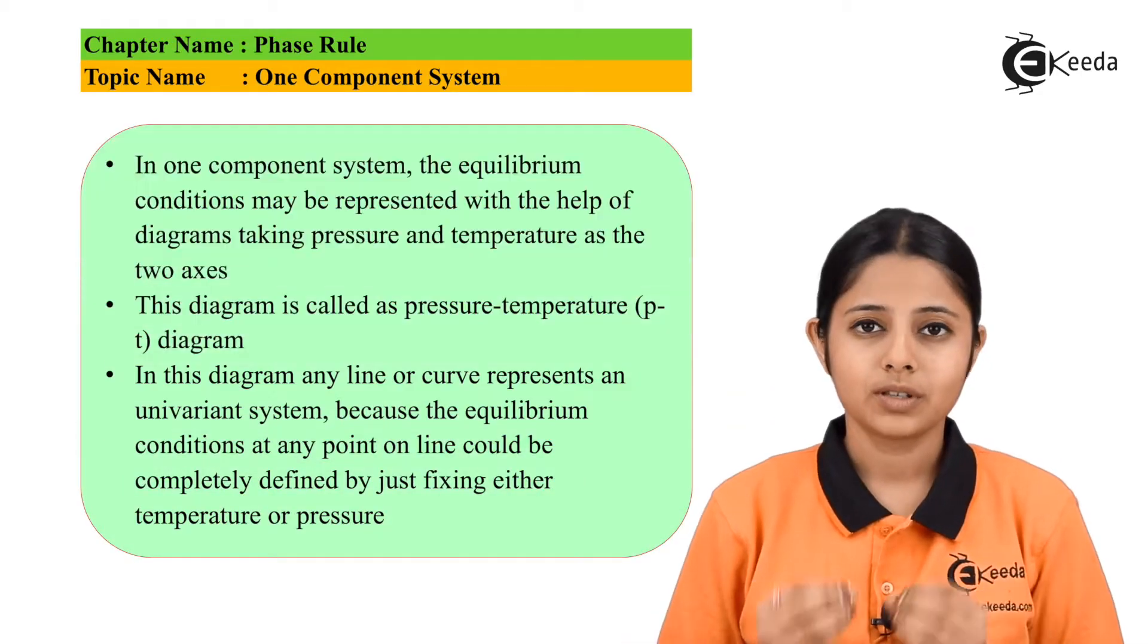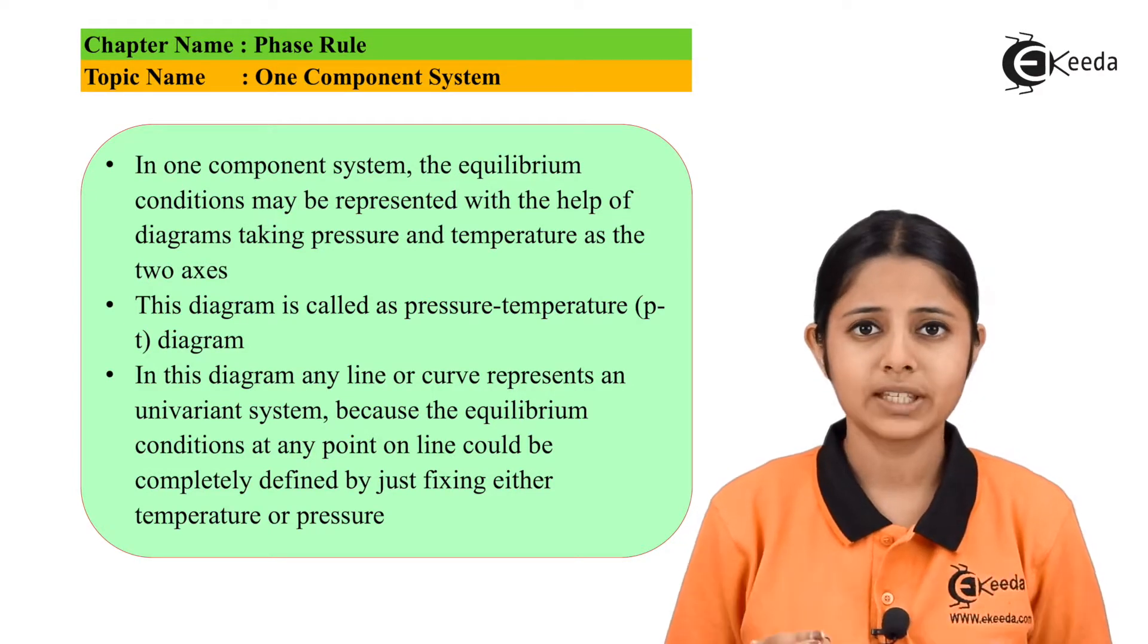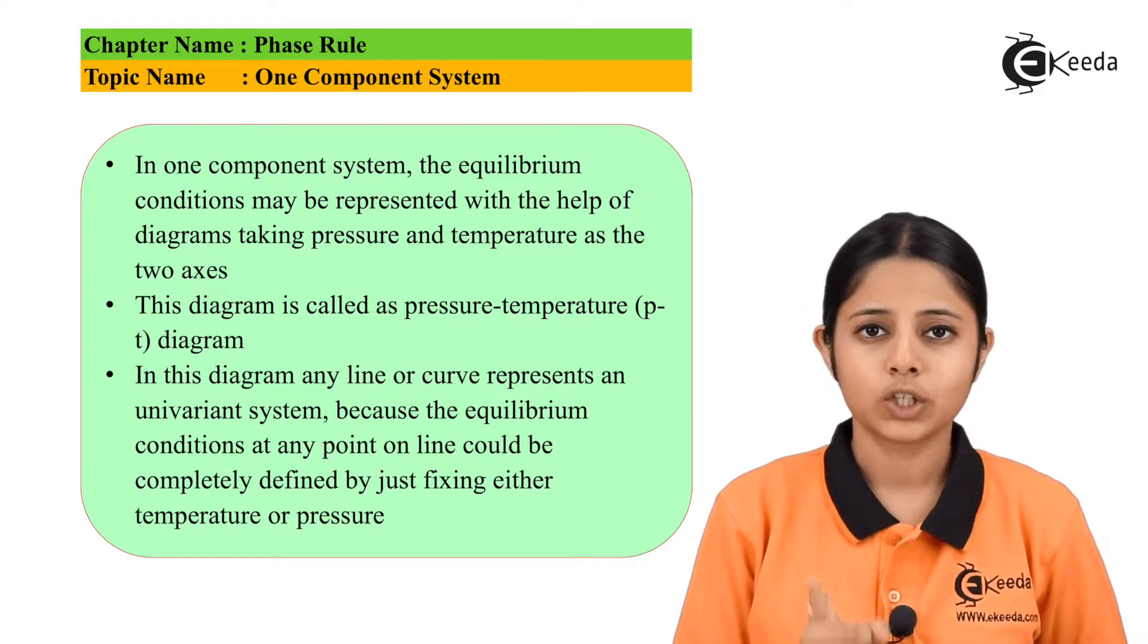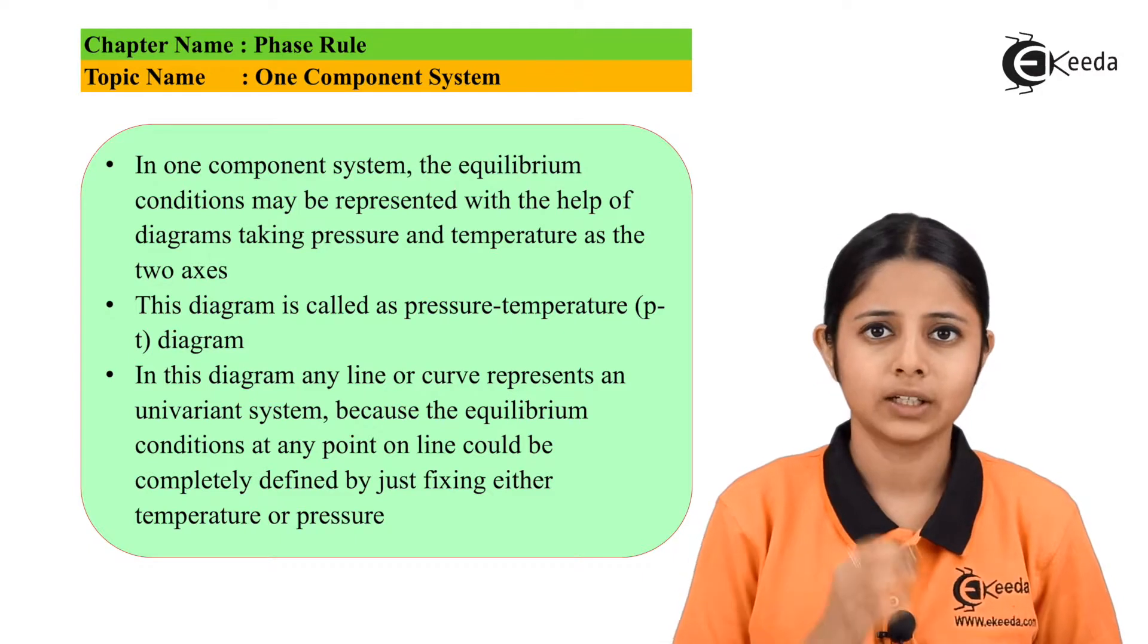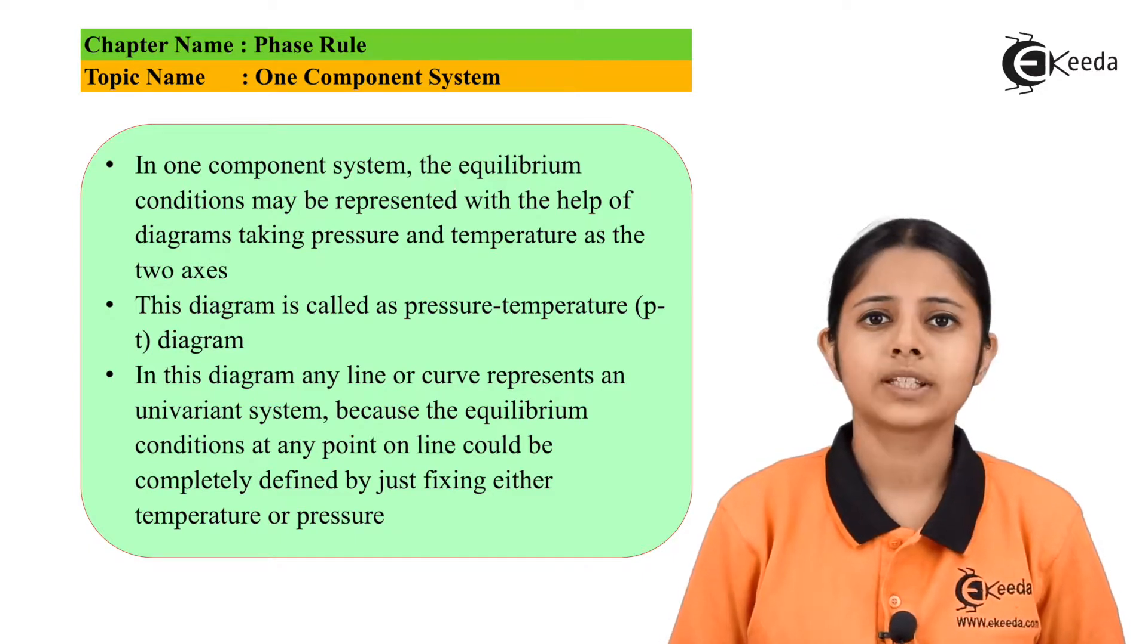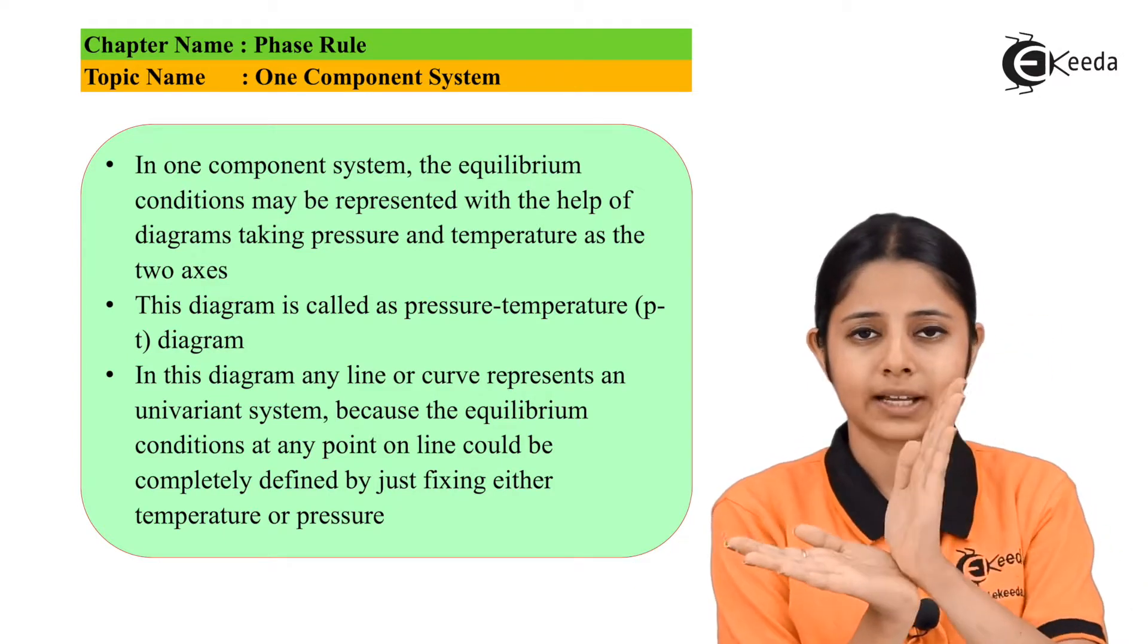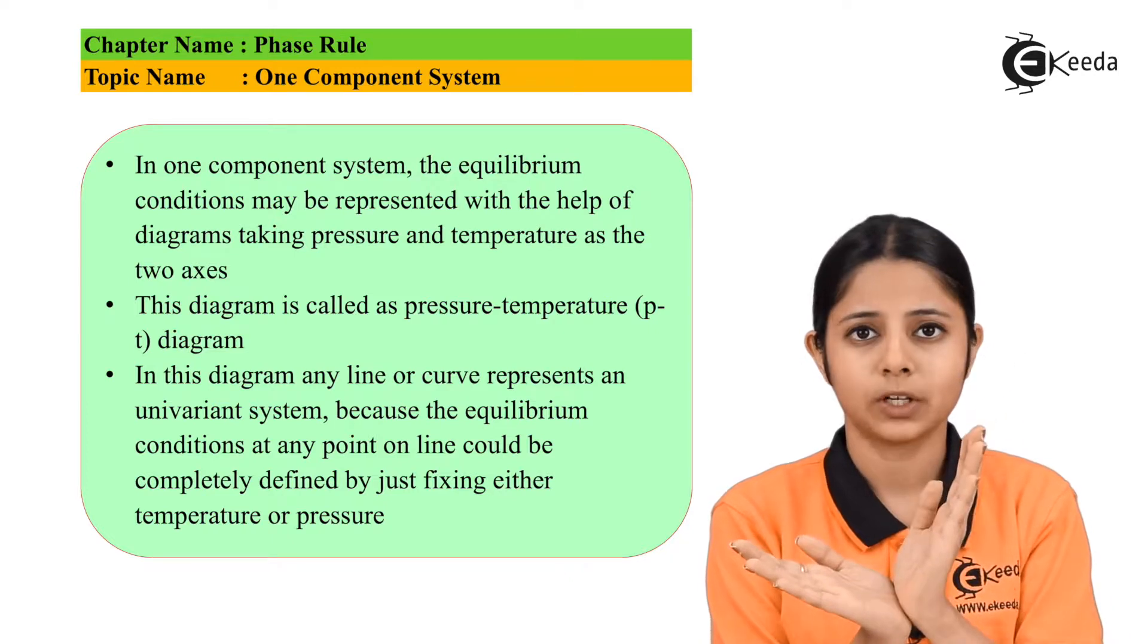For one component system or systems consisting only of one component, for example water, the phase diagram can be represented by two axes: the temperature and the pressure axis. If we keep the x-axis or horizontal axis for temperature, then the y-axis, the vertical axis will be for pressure. It will be temperature versus pressure axis.